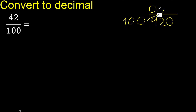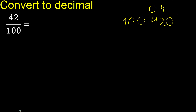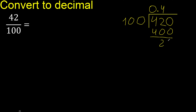Multiply by which number is nearest to 420 but not greater. Multiply by 5 is 500 — is greater. Multiply by 4 is 400 — is not greater. Subtract: 20.